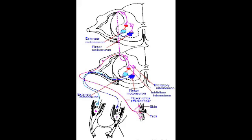The vigour of one of these flexor reflexes depends upon the strength of our stimulus. For example, a weak pinch produces maybe a flexion of our foot; a slightly stronger one produces a flexion of both the foot and our leg; and a very strong pain received by our nociceptors in our skin will produce a flexion of both the foot, the leg, and even the hip.